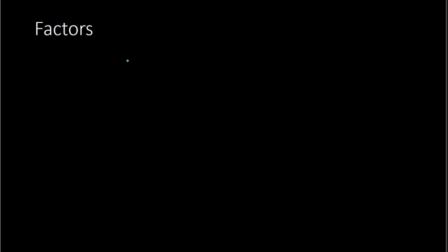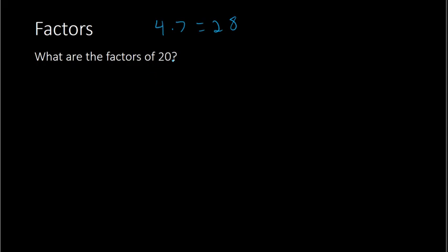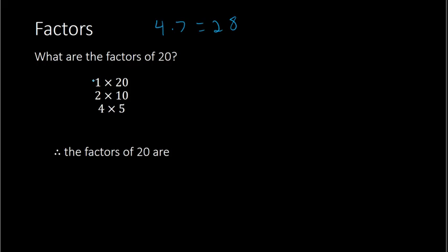Now we're going to discuss the concept of factors. Factors are the numbers that are being multiplied to get an answer. So in 4 times 7 equals 28, 4 is a factor, 7 is a factor, and 28 is the product. Here we find the factors of 20 — what whole numbers multiply together to get 20? We could do 1 times 20, 2 times 10, or 4 times 5. So the factors of 20 are: 1, 2, 4, 5, 10, and 20.